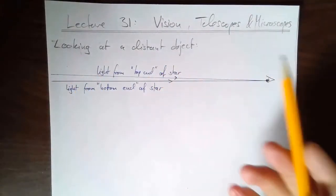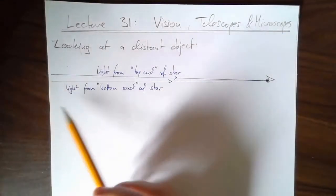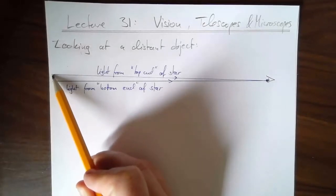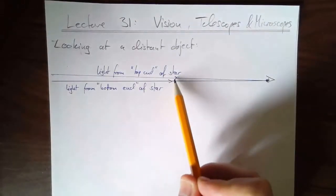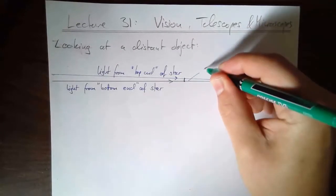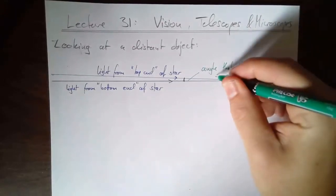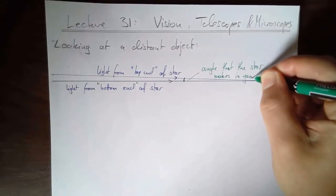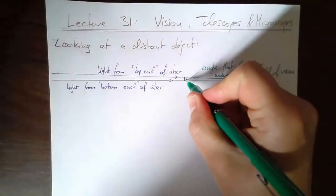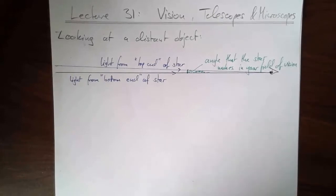Let's imagine we look at some very distant object - say a star. The star is huge, but it appears very small because it's so far away, making a very small angle in the sky. If you look at the bottom end and the top end of the star in your field of vision, those two rays make an angle that's utterly tiny. We want to make this angle bigger - that's our goal.